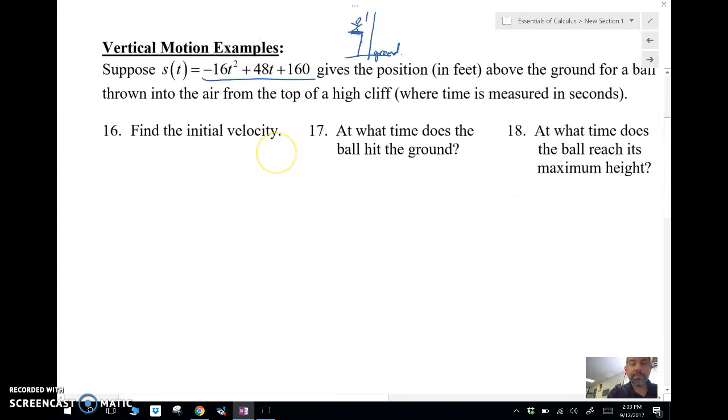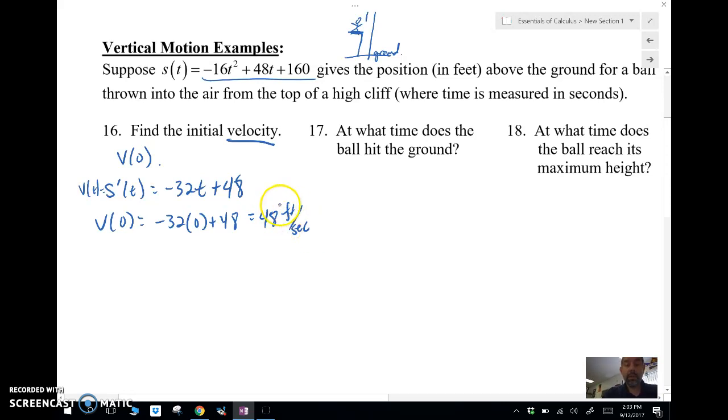The initial velocity is v sub 0. So in order for me to find that, I first have to find the derivative of the position because that's my velocity. So I'm going to get negative 32t plus 48, and I'm going to plug in 0. Negative 32 times 0, which is 48 feet per second. So there's my initial velocity.